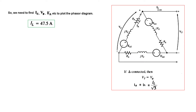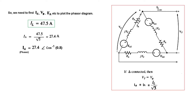In a delta connection, the terminal voltage equals the per-phase voltage, so Vt = V_phase. However, the line current is greater than the phase current. The armature current Ia equals the line current divided by √3, so Ia = 47.5 / √3 = 27.4 amperes. For the phasor plot we also need the phase angle: Ia phasor = 27.4 at angle cos⁻¹(0.8) = +36.87 degrees.